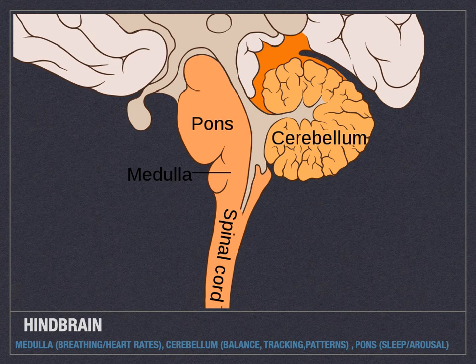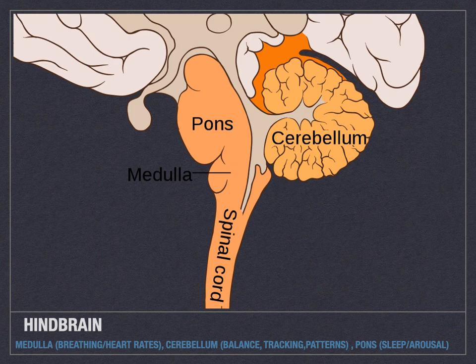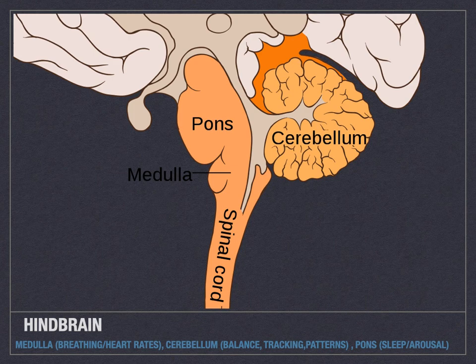I practice Taekwondo, and as you advance in ranking you have to learn forms — a series of different movements. When you first start learning a form, you feel awkward and uncoordinated. But the more you do it, it becomes second nature. You don't have to think about it anymore — it's what people call muscle memory, and that's the cerebellum at work. You can see this with marching band kids too: they've practiced stepping together so many times that in the hallways during passing periods, they naturally fall into step with each other without even noticing.